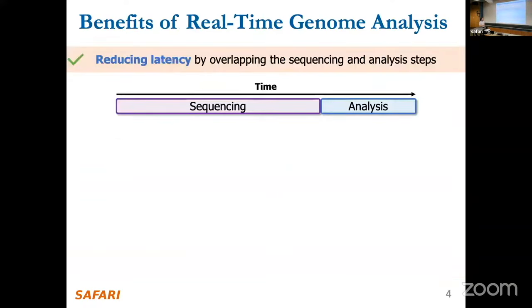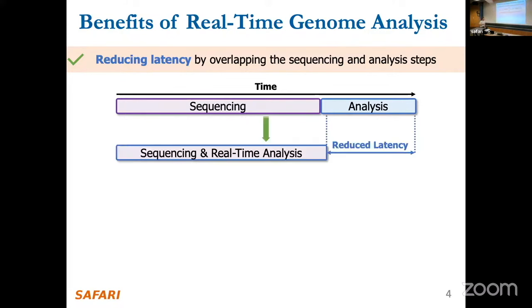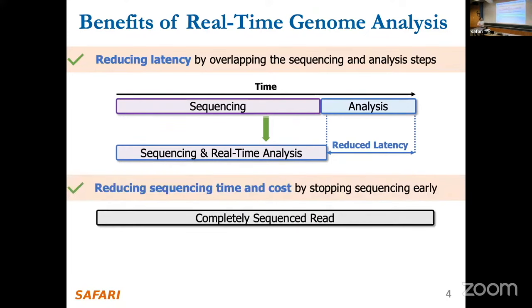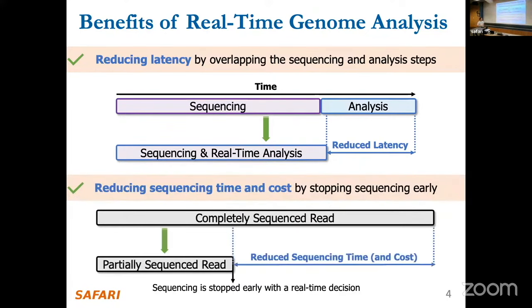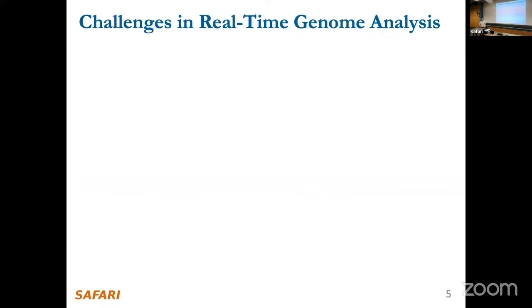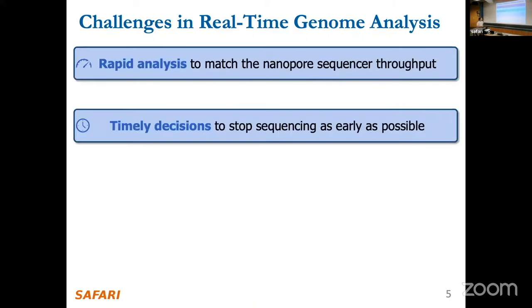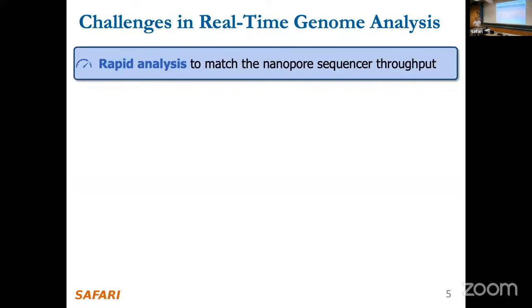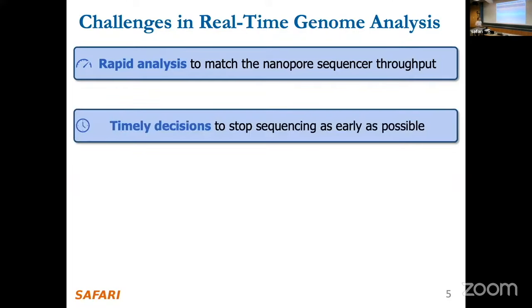We want high throughput but also low latency — not just to make an early-stop decision, but also in the end-to-end application. If you can analyze while still sequencing, you overlap these stages. And if you do early stopping, you don't even need to wait for full sequencing to finish. So real-time analysis is a new opportunity with this technology.